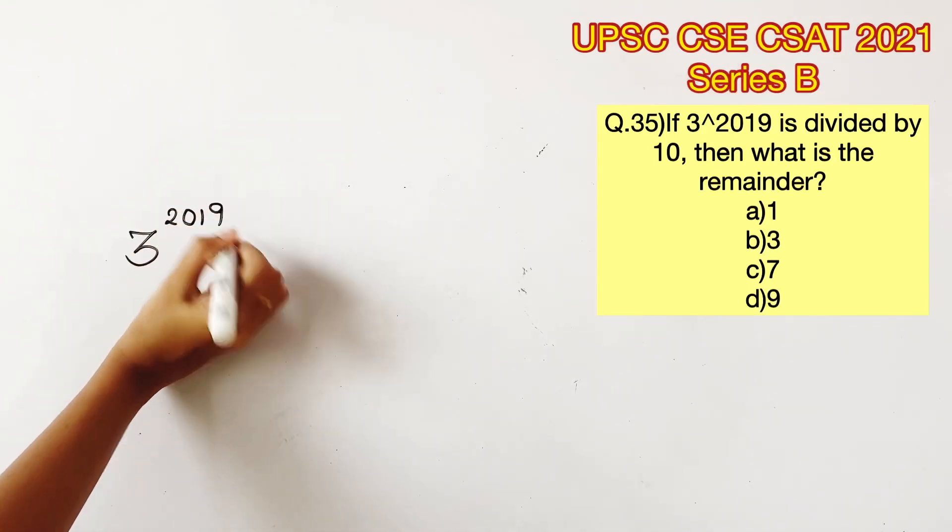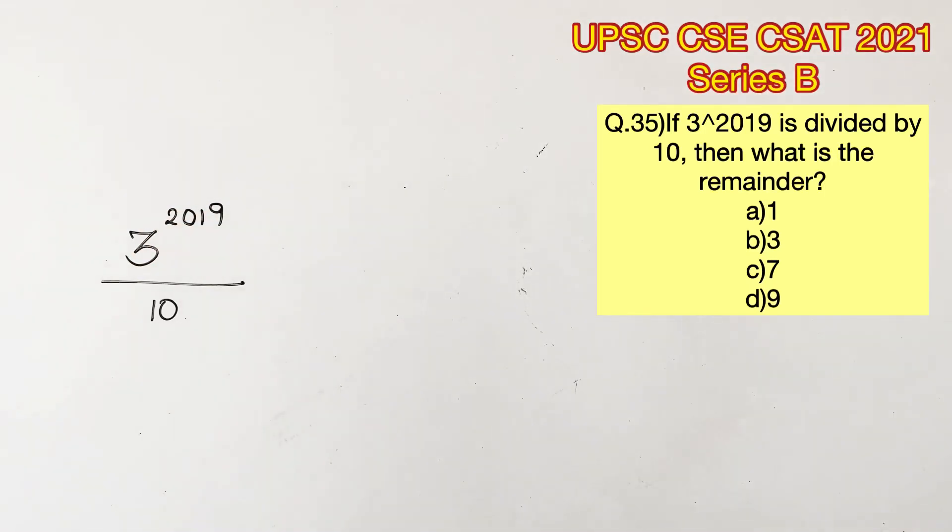If 3 power 2019 is divided by 10, then what is the remainder?